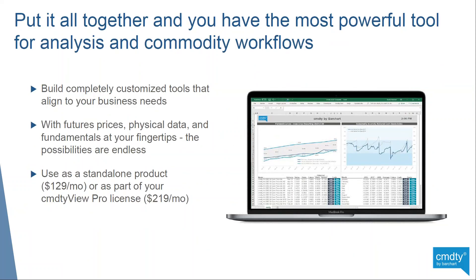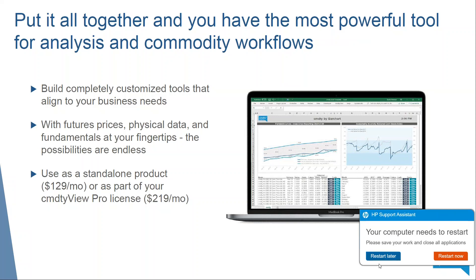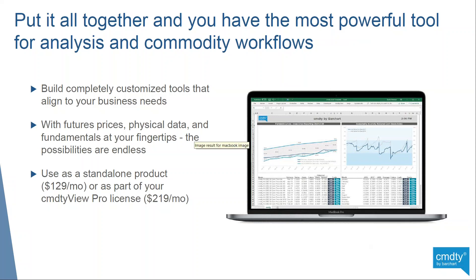When you put all that together, you have what's probably the most powerful tool out there for analysis and commodity workflows. What makes it so powerful is that you design it — you get to pick whatever you want and deploy it into your workflow however you need. Build completely customized tools, pull futures prices, physical data, and fundamental data at your fingertips. The sky's the limit. Commodity View Excel is available as a standalone product at $129 a month, or as part of your Commodity View Pro license — a compelling value.